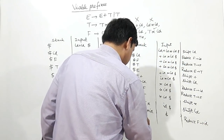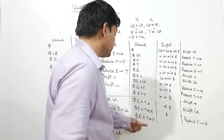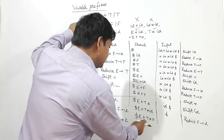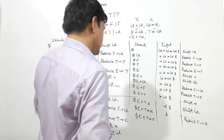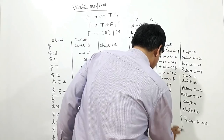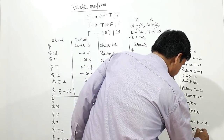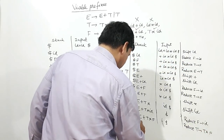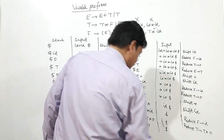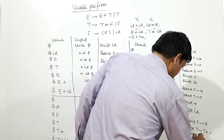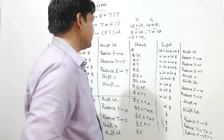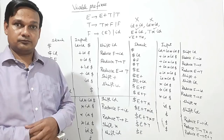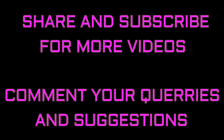Dollar E plus T star F. T star F can be reduced by T, so it becomes dollar E plus T, which can be reduced to E. So only these are the viable prefixes.